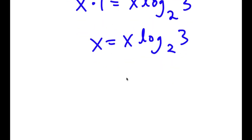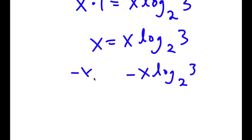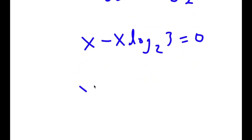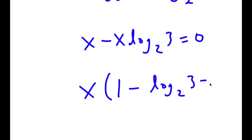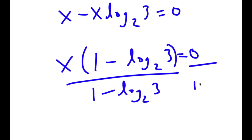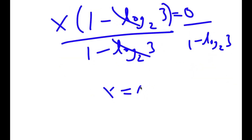I'm going to subtract x times log base 2 of 3 from both sides. So I get x minus x times log base 2 of 3 is equal to 0. If I factor out x, I get x times (1 minus log base 2 of 3) is equal to 0. Dividing both sides by (1 minus log base 2 of 3), I'm left with x is equal to 0.